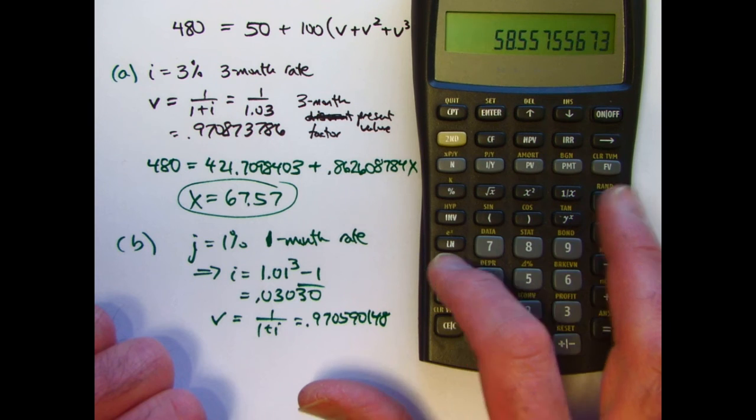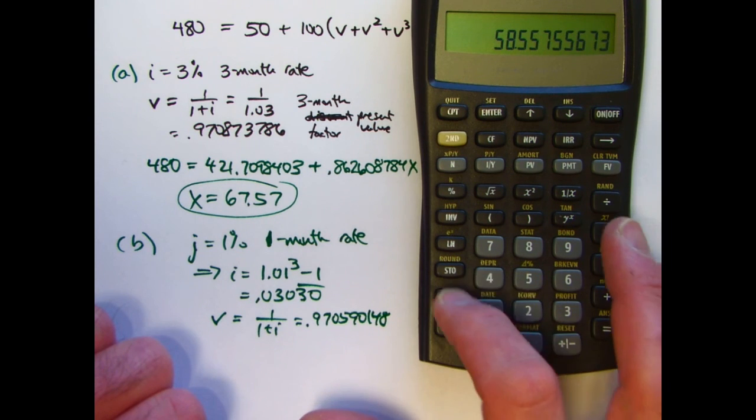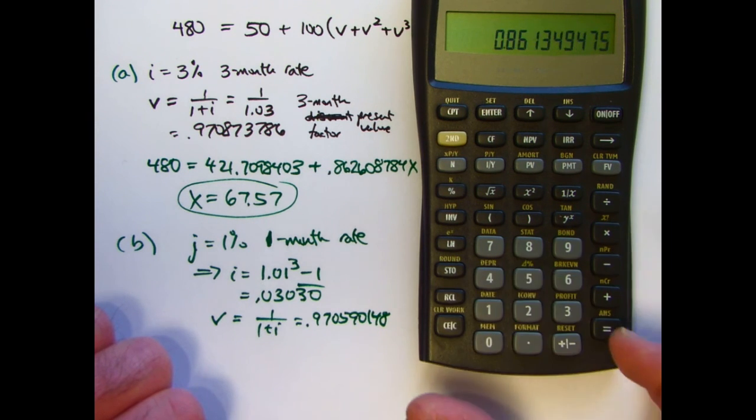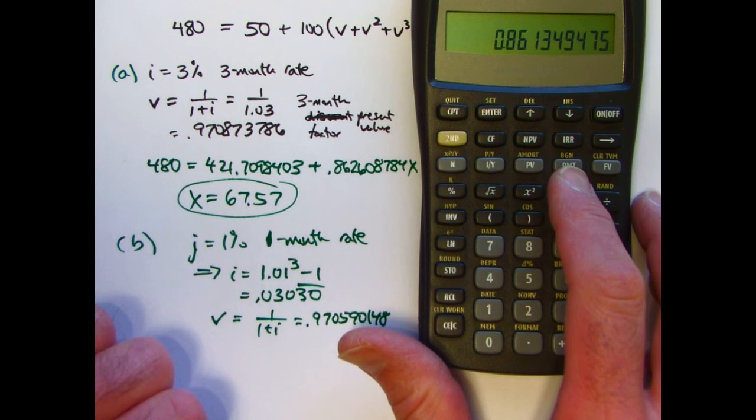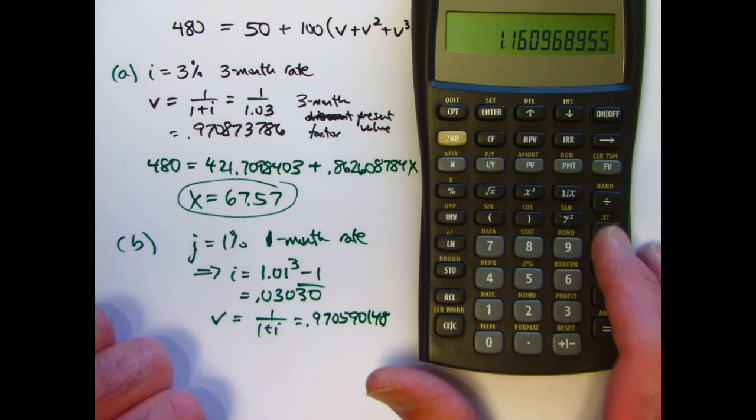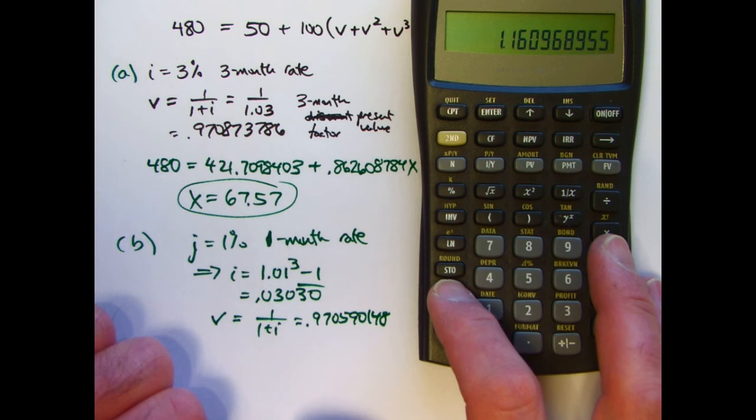Let's store this in register 9 for the moment. V to the fifth is in register 5. Divide by that means multiply by its reciprocal. Multiply what was in register 9.